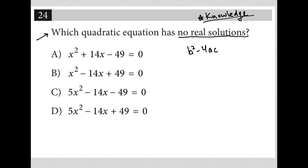So if b squared minus 4ac is greater than zero, we actually expect two real solutions. If b squared minus 4ac is equal to zero, we expect one real solution. And if b squared minus 4ac is less than zero, we expect no real solutions.